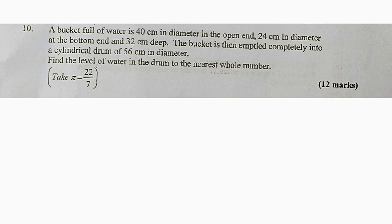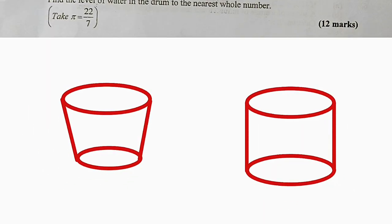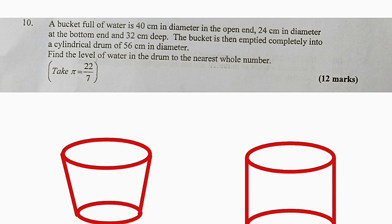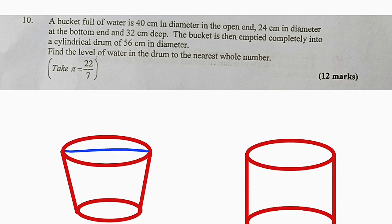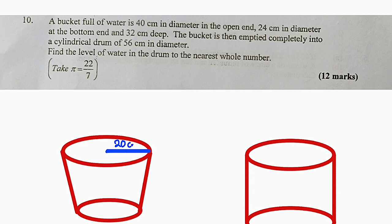For better understanding, let us draw a bucket as well as this drum. So here we have a bucket as well as a drum. According to this question, the diameter at the top of this bucket is 40 cm, which means the radius is 20 cm, because we are interested in the radius alone. So from the center to the circumference, this is 20 cm.